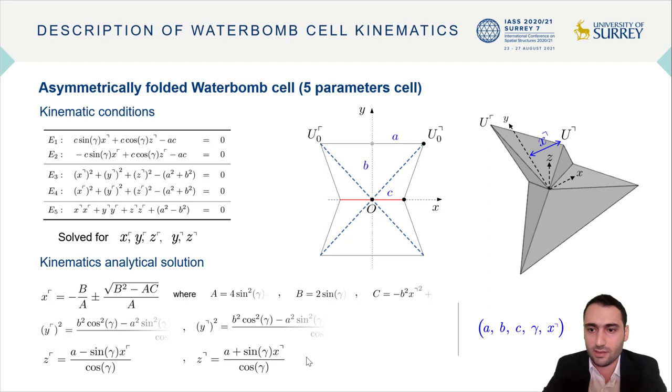However, the complete solution is of course in the paper. In this case, these relations depend on the five parameters a, b, c, gamma, and x upper right that control the kinematics of this asymmetrically folded cell.